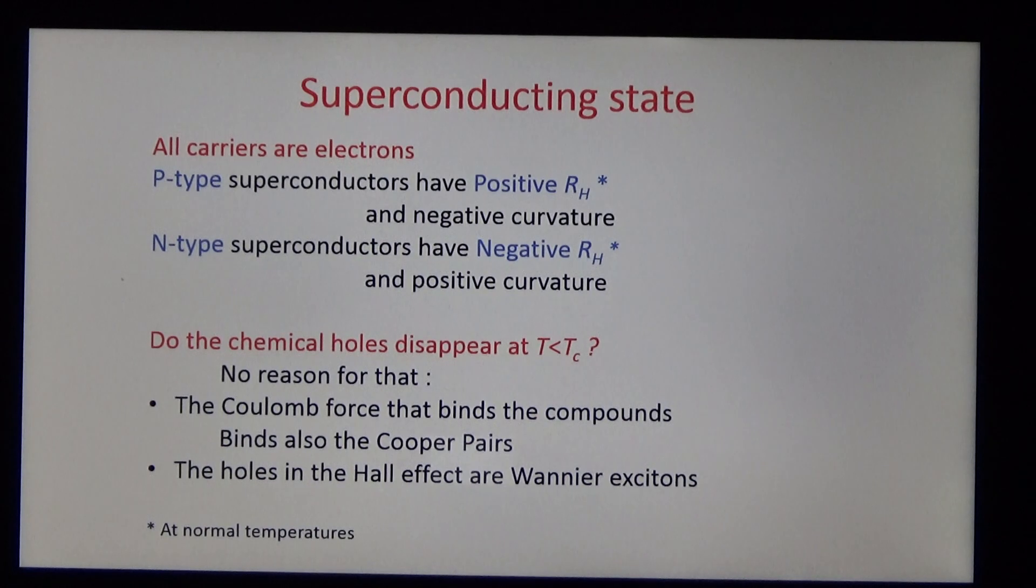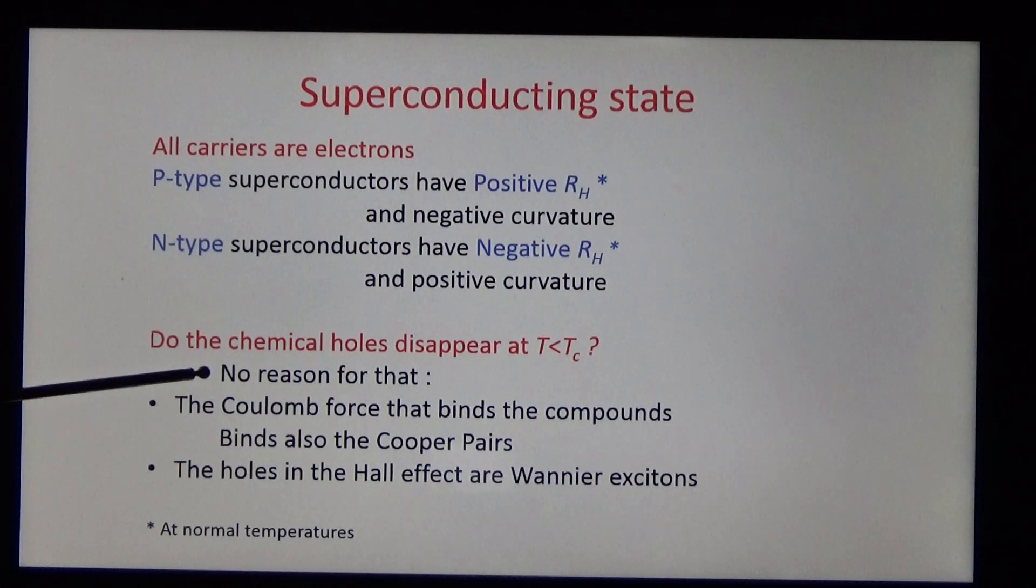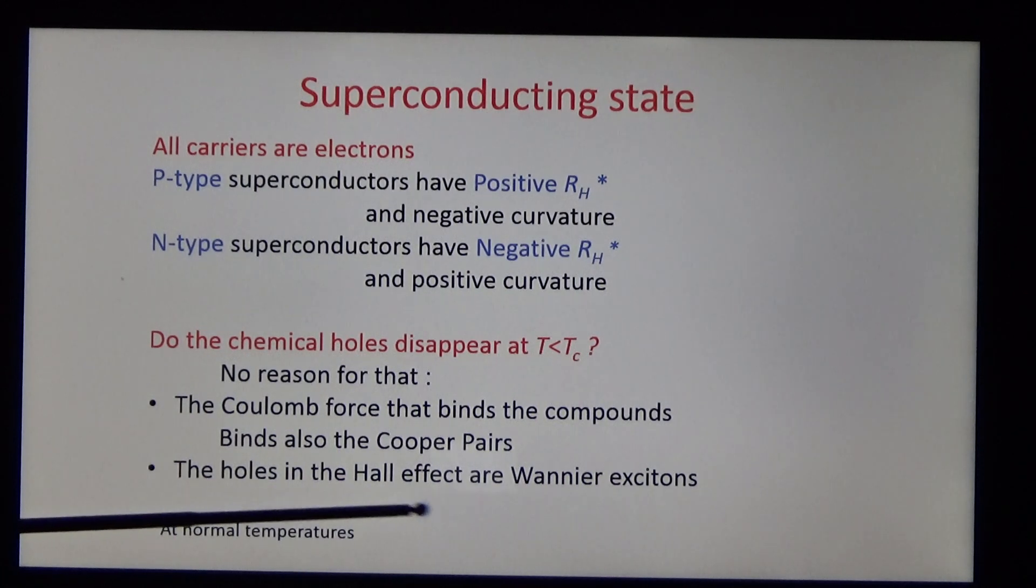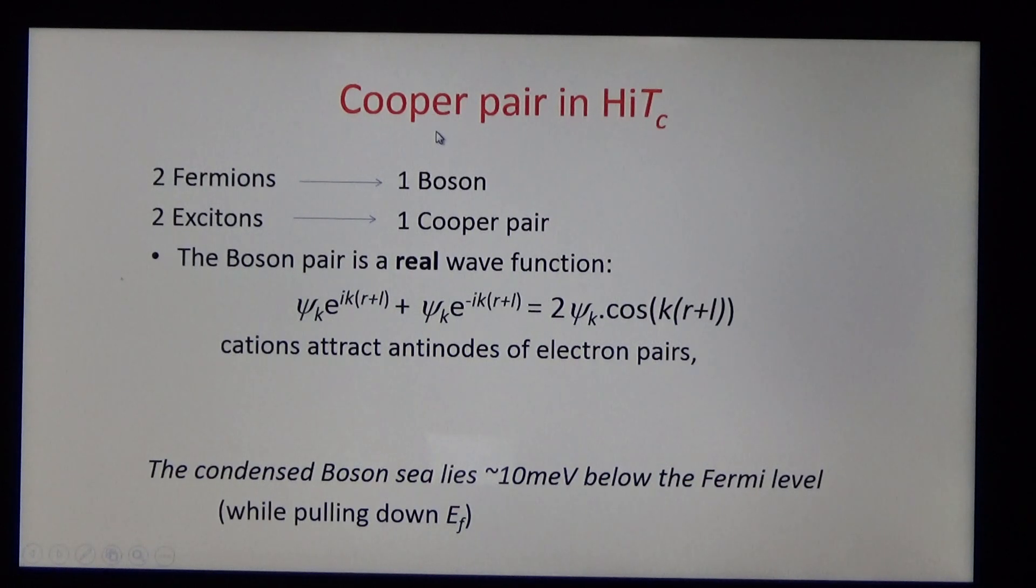So these holes are measured by the Hall coefficient at normal temperatures. Do they disappear when the superconductor is cooled through critical temperature? There's no reason for that. The Coulomb force that binds the compounds binds also the Cooper pairs. The holes in a Hall effect are Wannier excitons. So we have a situation where two fermions form one boson. The fermions have to be coherent. And two excitons form the Cooper pair. The boson pair is a real wave function.